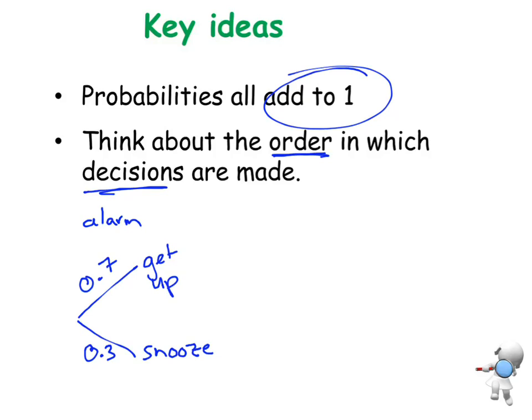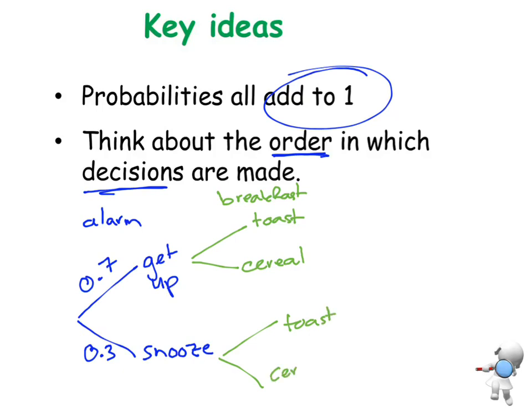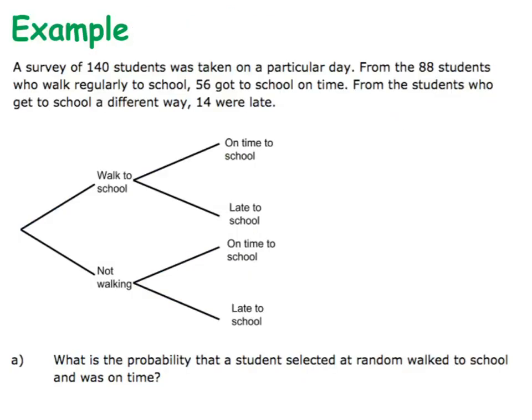Once I've decided what to do with that, then I need to think about another decision I'd make after that — what am I going to have for breakfast? Am I going to have toast or am I going to have cereal? The probabilities might be different depending on whether I hit snooze or whether I get up straight away, but both are options. So each layer of my tree diagram represents the order in which I make decisions.